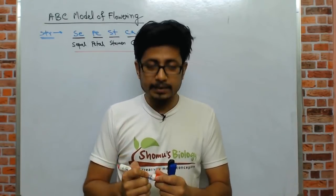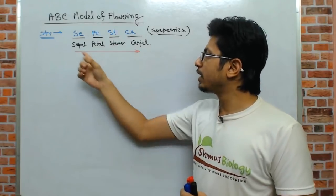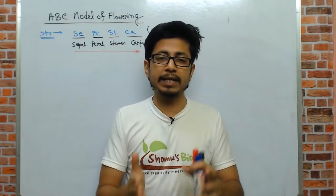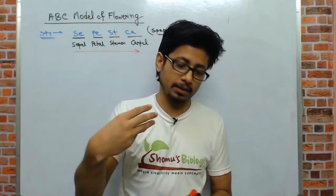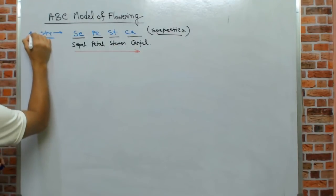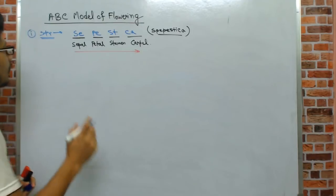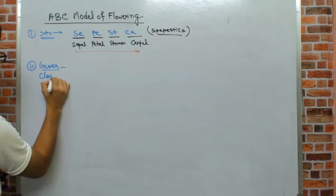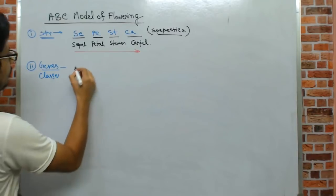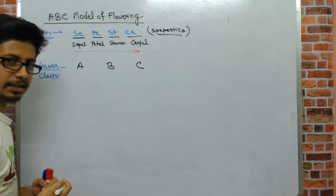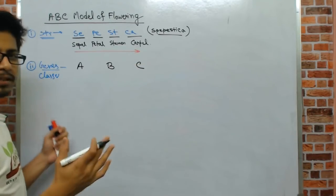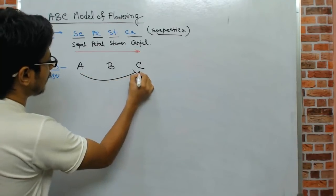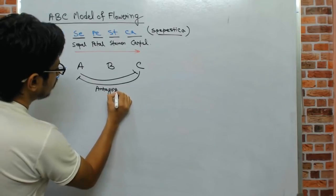The four components of a flower are built due to the activity of proteins produced from certain genes. These are known as three different classes of genes — that's idea number two. We have class A genes, class B genes, and class C genes. One important thing: A and C genes are antagonistic in nature.